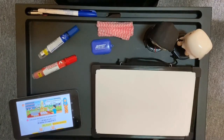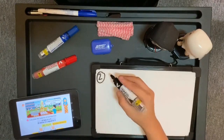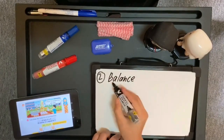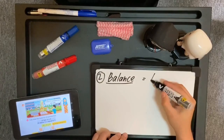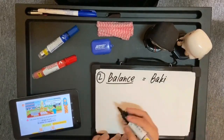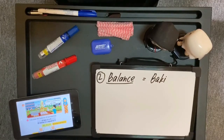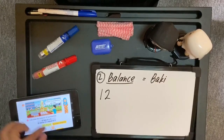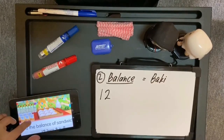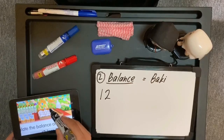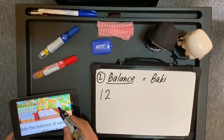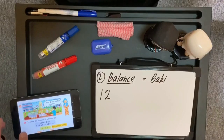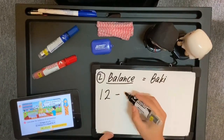Tengok teks muka surat 75, soalan yang kedua. Calculate the balance of sandwich. Balance ini pun merujuk kepada soalan tolak, iaitu cari baki. 3 from 12 sandwich are sold. Sandwich tu ada 12, dalam gambar tu ada 12 sandwich. 3 daripada 12 sandwich telah dijual. Bila dijual, semakin berkurang. Jadi, operasi tolak.